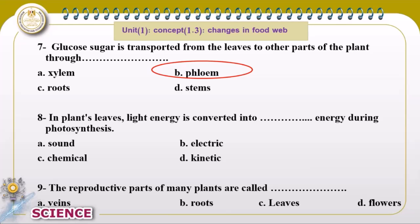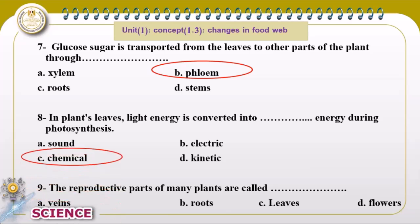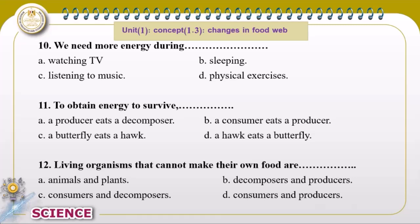In the leaf, light energy is converted into chemical energy during photosynthesis. The reproductive part of many plants is called the flower.